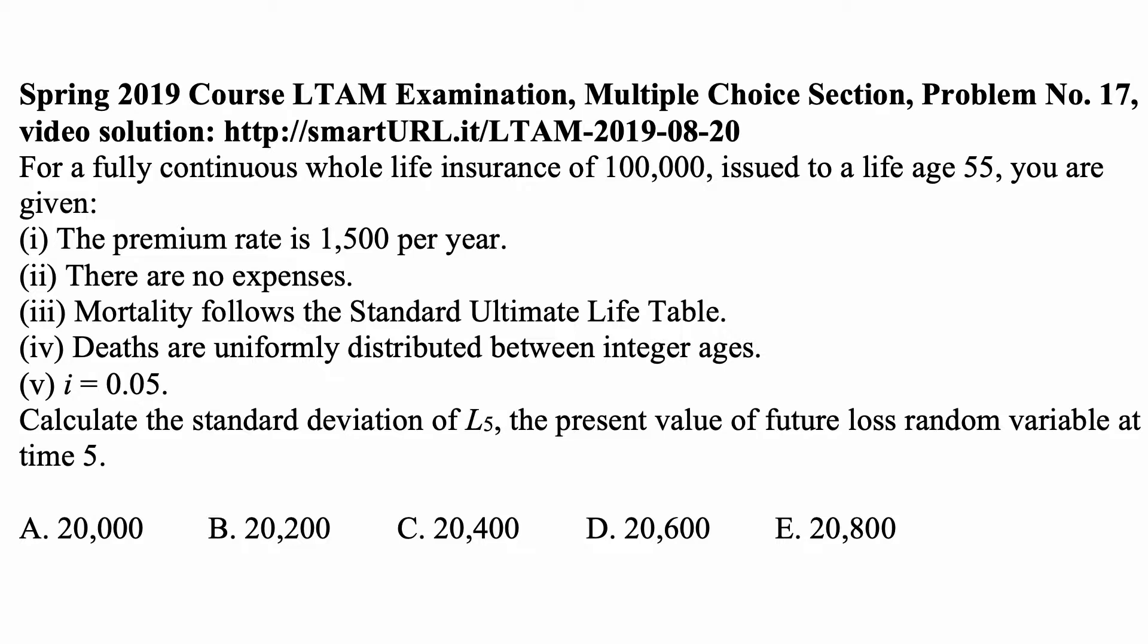For a fully continuous whole life insurance of 100,000 issued to a life age 55, you are given: the premium rate is 1,500 per year, and there are no expenses.